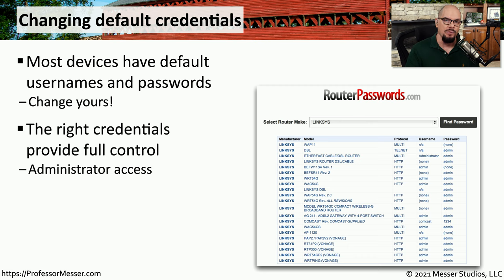We also might want to configure our switch so that any interfaces that currently don't have anything connected to them don't have a connection into the default VLAN. Instead, we might want to create a dead-end VLAN or an impasse VLAN and assign any unused interfaces to that dead-end VLAN. This way, if someone does find their way onto that interface, plugs in their device, and tries to gain access to the network, they'll find they're on a VLAN that goes nowhere.